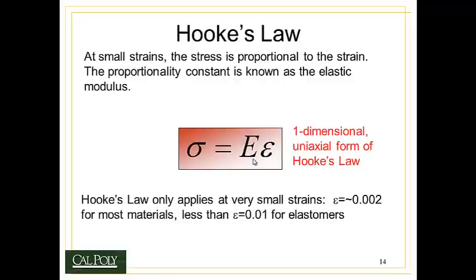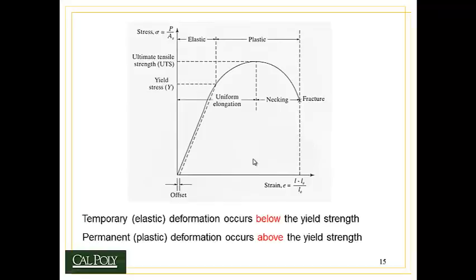Hooke's Law only applies under very small strains, typically less than 0.002, or 0.2% strain, for most materials. But Hooke's Law still works for elastomers or rubbers up to about 0.01 strain, or 1% strain. There are two kinds of deformation we'll run into in this class: elastic deformation and plastic deformation. Elastic deformation is temporary, while plastic deformation is permanent. If you let go of the load after plastic deformation, the material has permanently changed its shape. Whereas in elastic deformation, if you release the load, it goes back to its original shape.